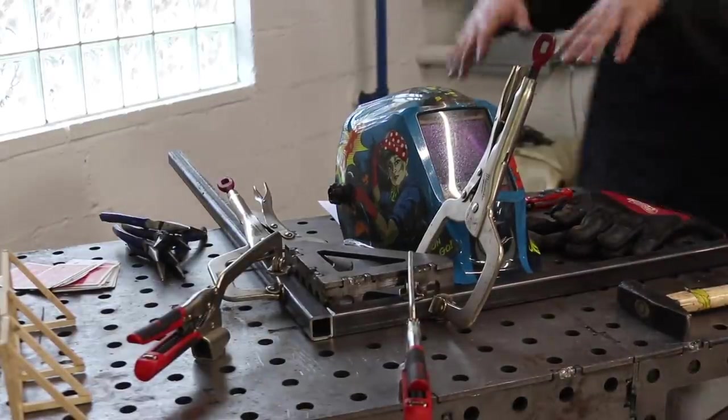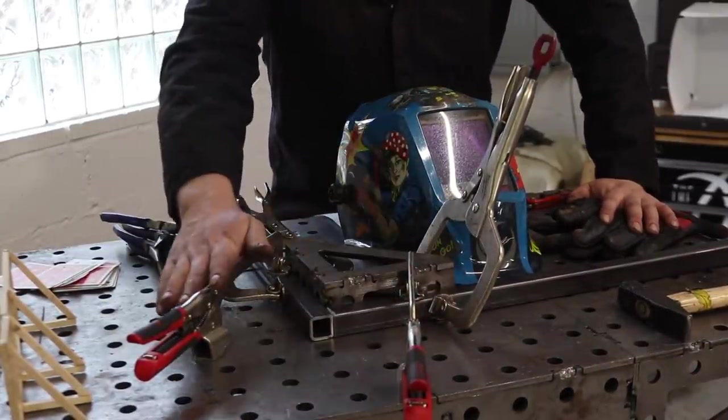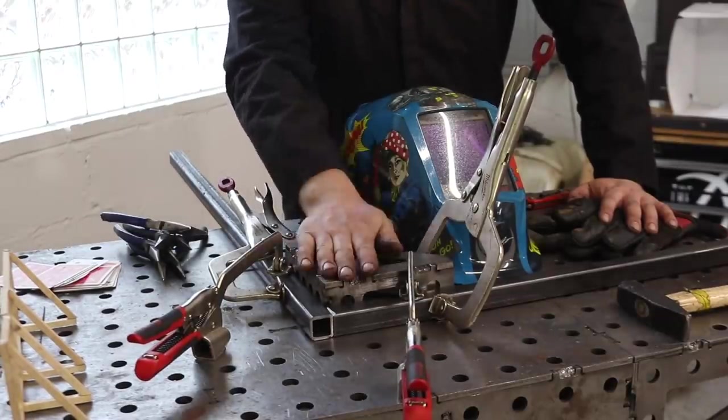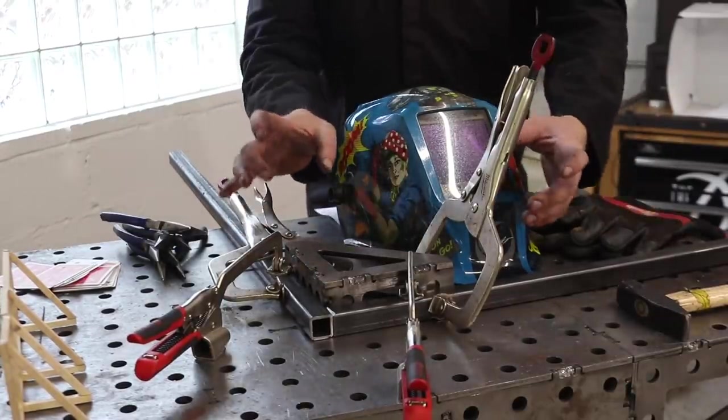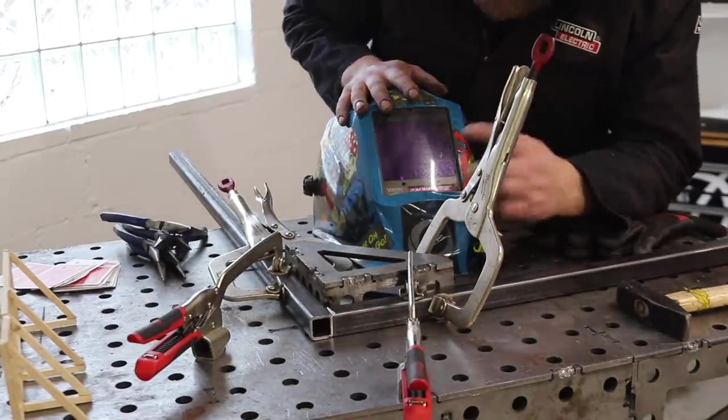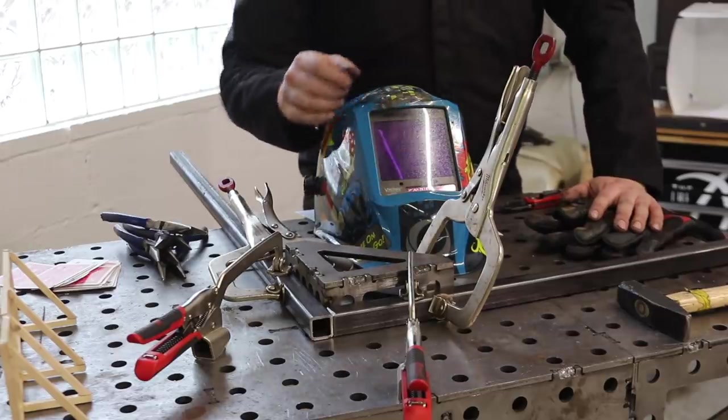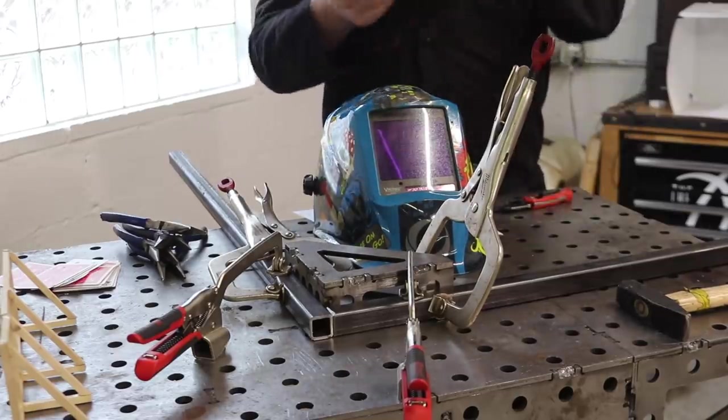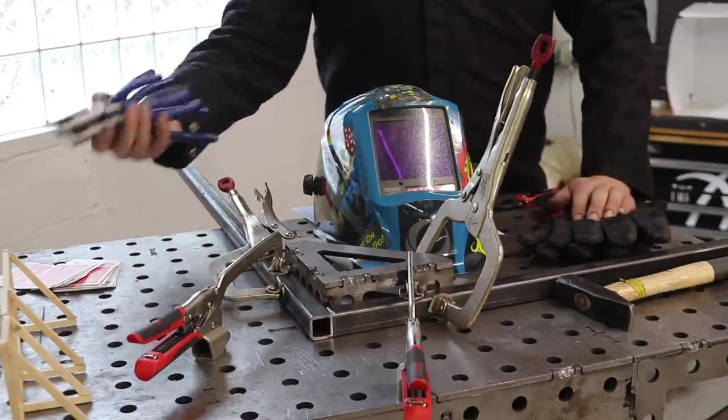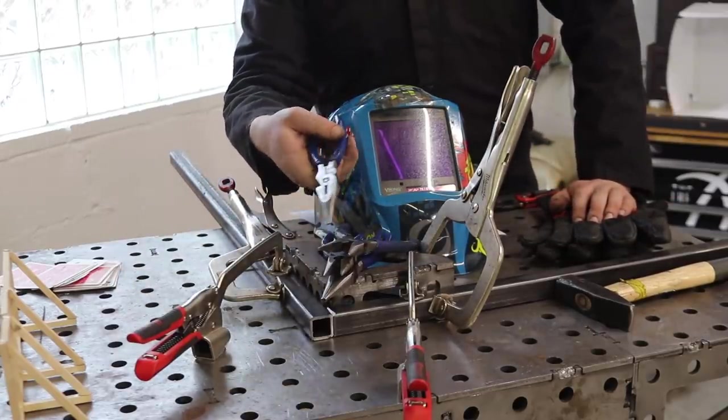We got this all fixtured out on our weld table. We got armor tools clamps holding it down, a weld square from CertiFlat, Milwaukee grippity grip things. Gonna use our Lincoln Viking helmet, this is the 3350. I really like this thing, big viewing area, lots of clarity. Got gloves, hammer, and about 14 pairs of blue handled Harbor Freight needle nose pliers.